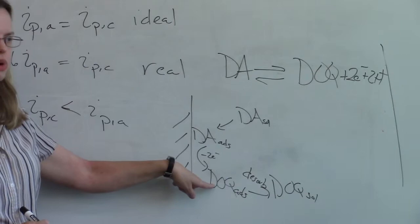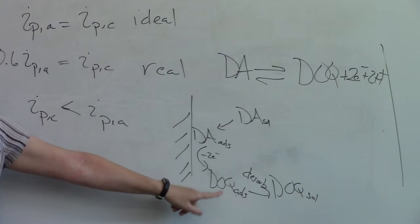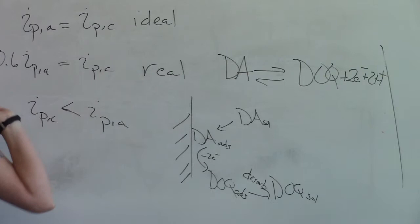So what happens, even on the timescale of this 10 millisecond scan, dopamine orthoquinone falls off the electrode and I don't get a chance to reduce it. The reduction, this sticking to the electrode is about 10 times, the kinetic coefficient is about 10 times weaker.